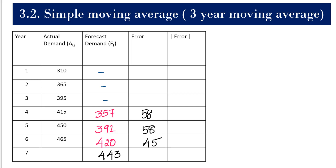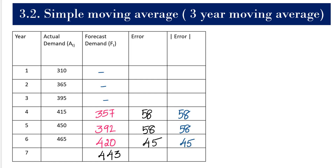We need to take the absolute value of the error. If by any chance we had a negative value like minus 58, it would cancel out with a positive value and distort the result. So we convert all errors to positive values. The absolute value of 58 stays 58; if it were minus 58 it becomes plus 58, and 45 stays 45.